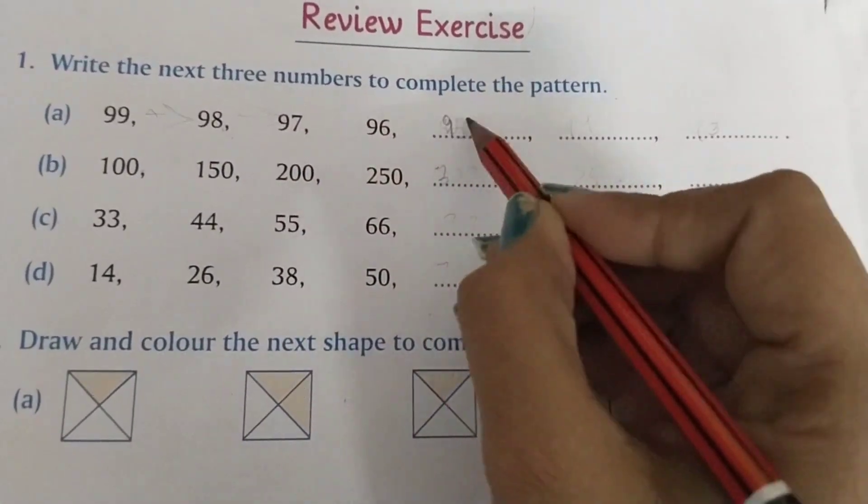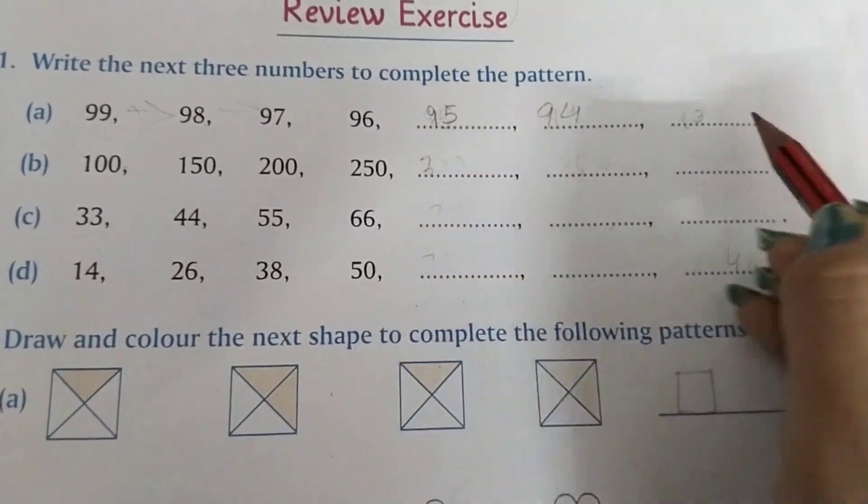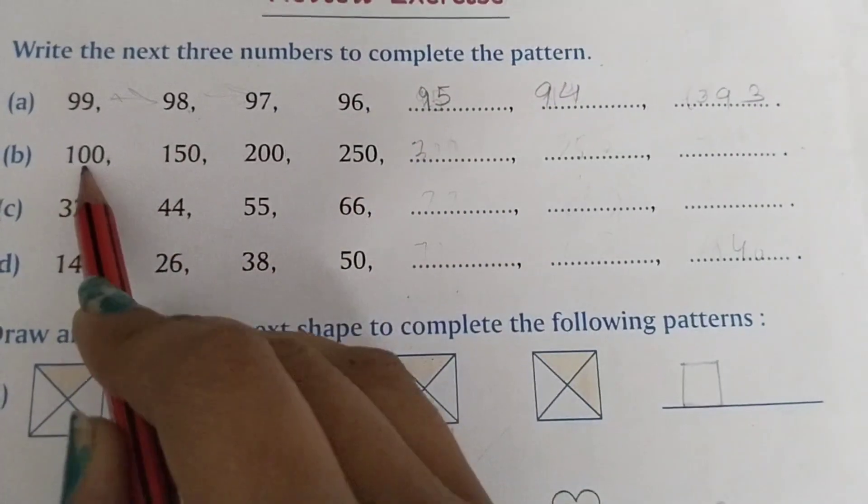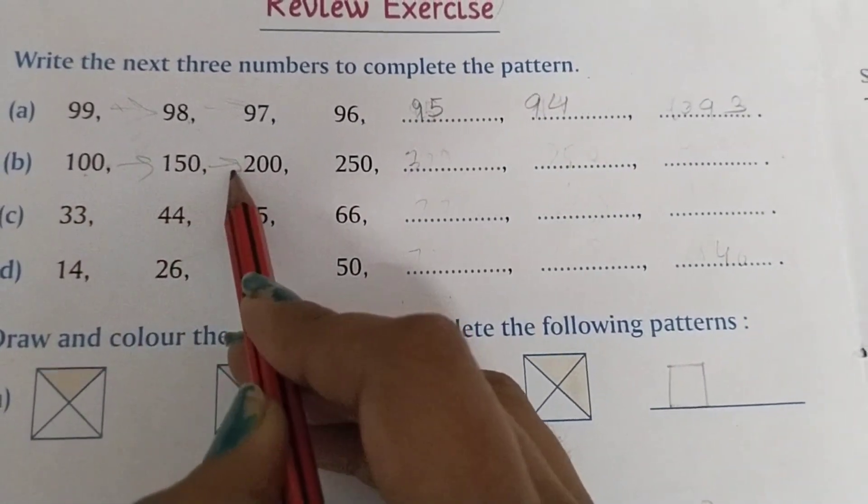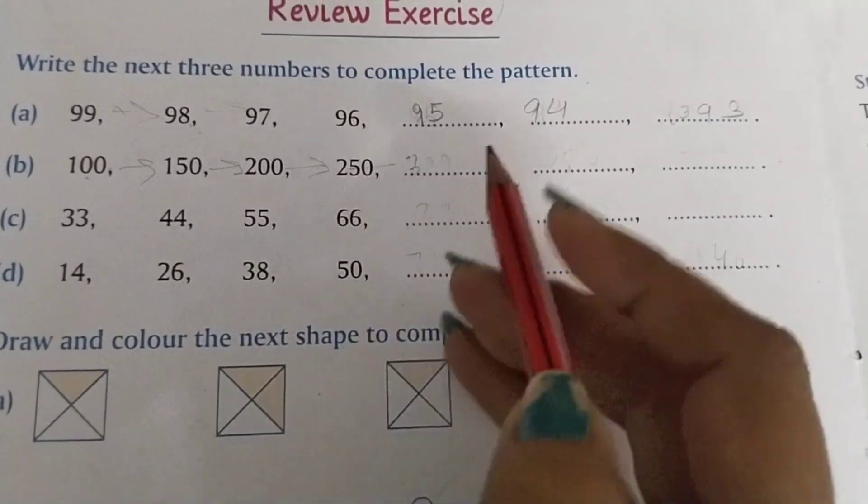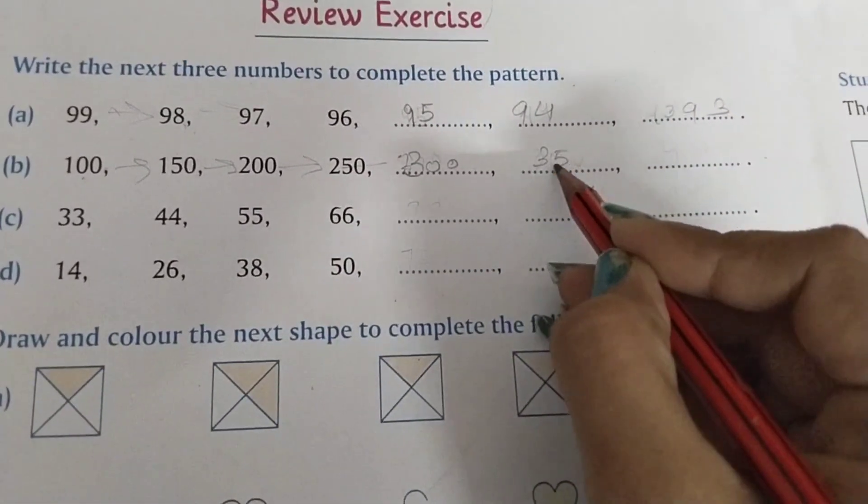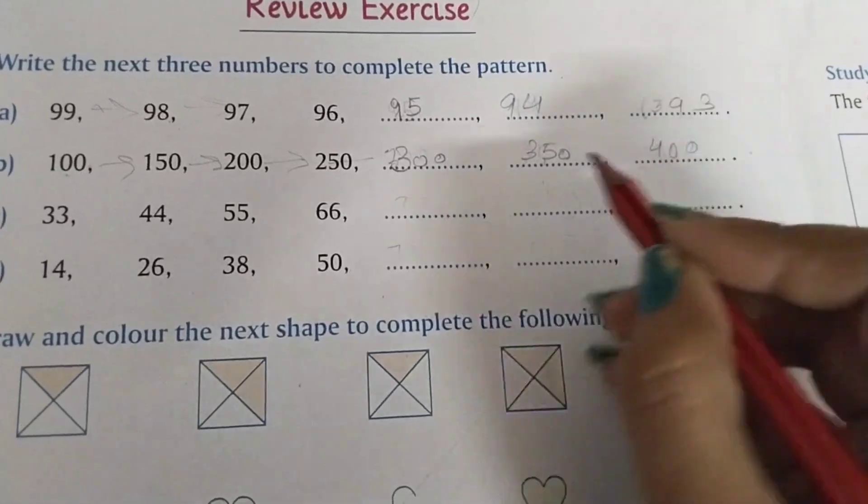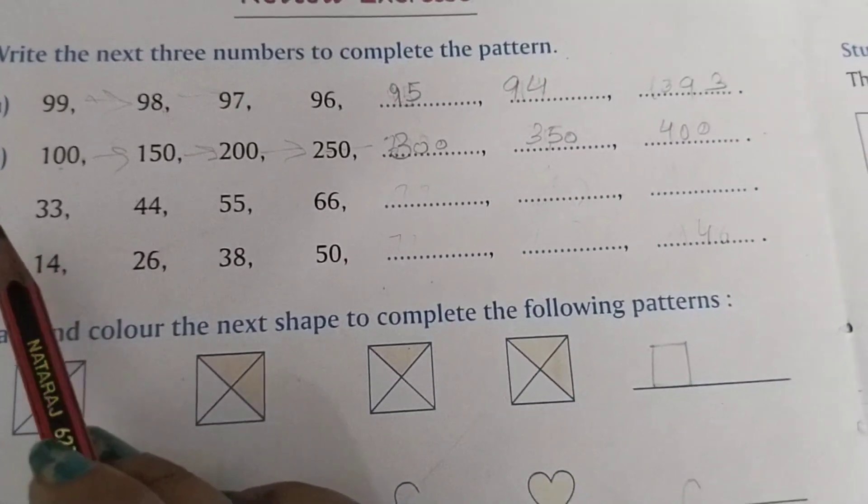100, 150, 200, and we are adding 50: 300, 350, 400. Next we have 33, 44, 55, 66.